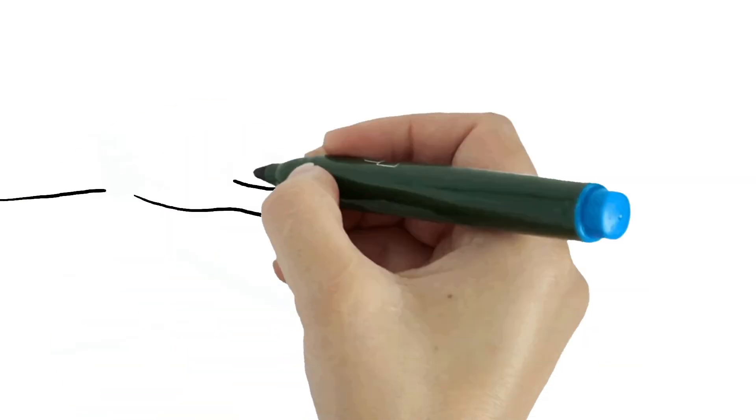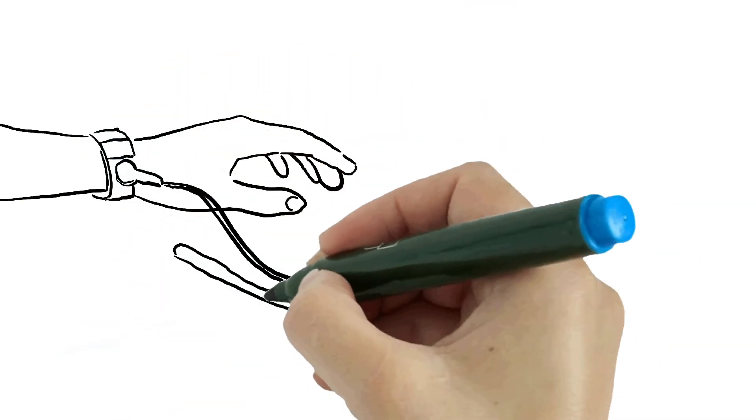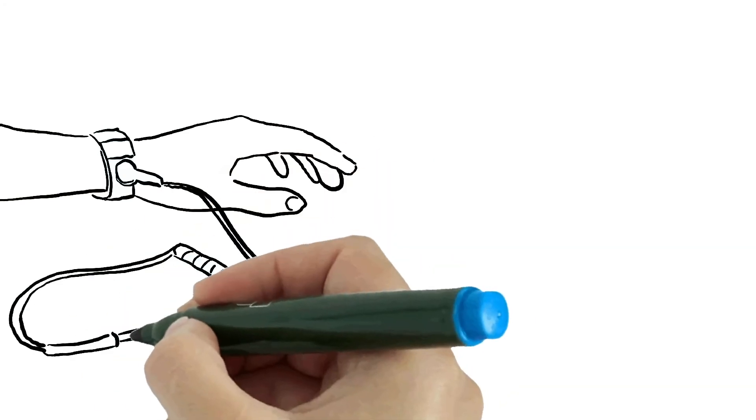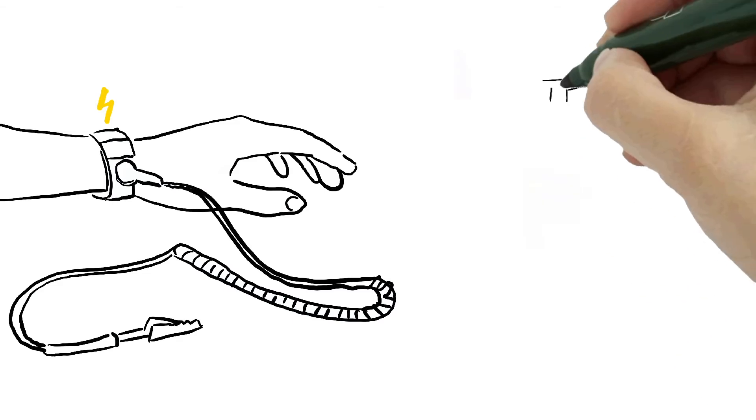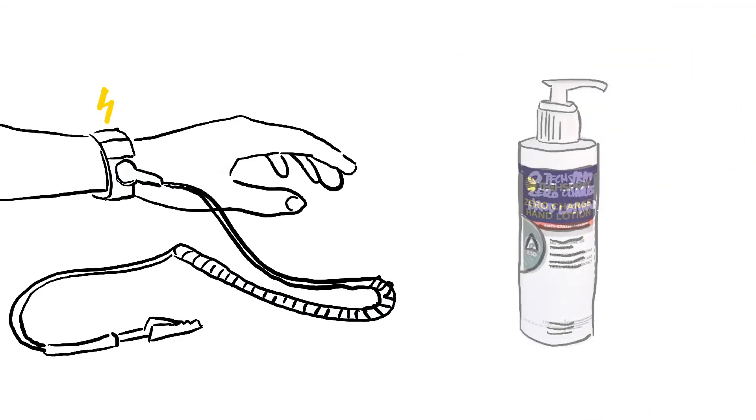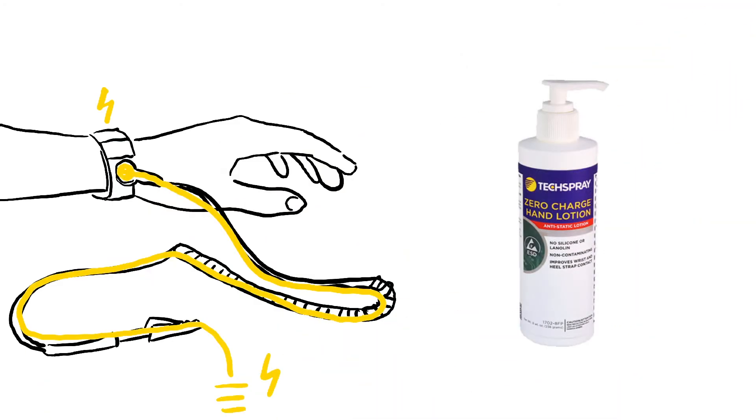A person is often connected to the ESD-safe circuit using a wrist strap. Dry skin can impede good continuity between the skin and the connective surfaces of the strap. Techspray hand lotion adds moisture to help, which is especially important in the winter months.